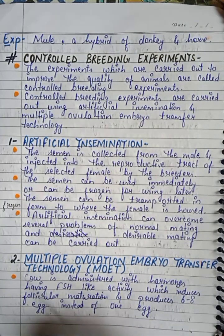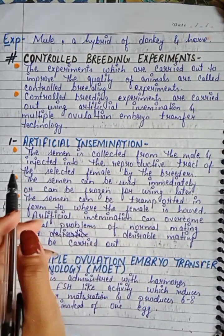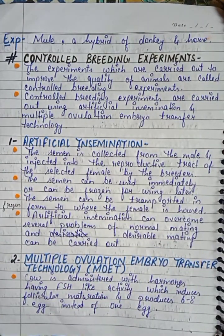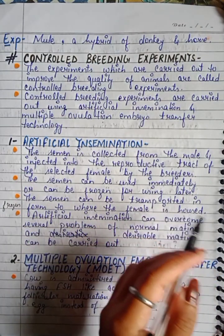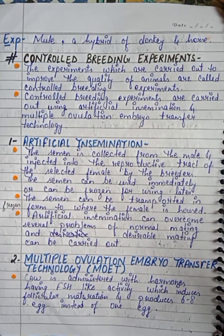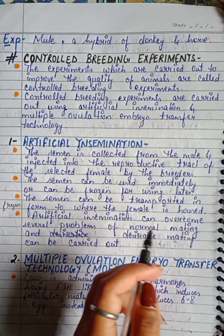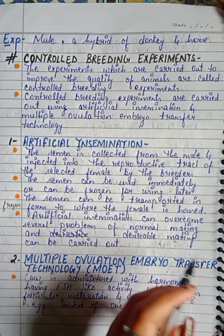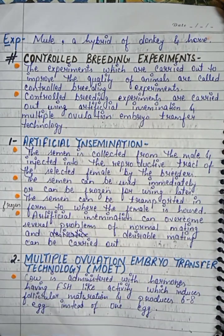In artificial insemination, the semen is collected from the male and injected into the reproductive tract of the selected female by the breeders. Semen contains sperm and seminal plasma. The semen can be used immediately or frozen for later use, and can be transported in frozen form to where the female is housed. Artificial insemination helps overcome several problems of normal mating and allows desirable mating to be carried out.